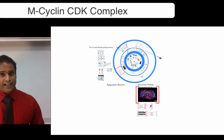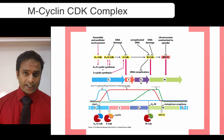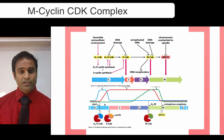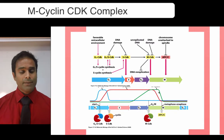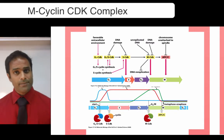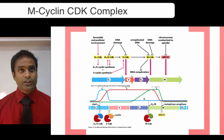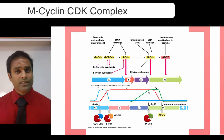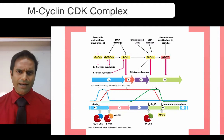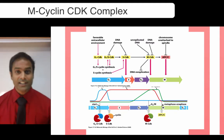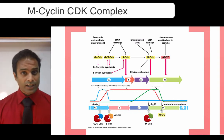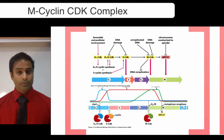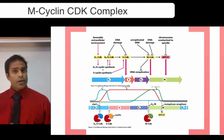Let's look at where it is most active. We're looking at the green line on this graph. During G1 and S, that green line is near the bottom. At G2 it starts to ramp up, and the m cyclin CDK, once produced, will positively feed back on itself and increase its own production. That increase in m cyclin occurs until exactly the end of metaphase, at which time it falls off sharply because it's destroyed by a ubiquitin ligase called APC, the anaphase promoting complex.